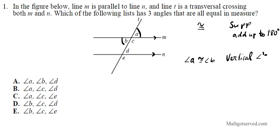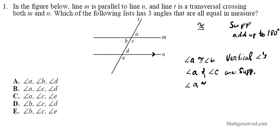Vertical angles are always congruent. Now, angle A and angle C are supplementary — supplementary angles basically means they add up to 180. Angle A is congruent to angle D. These two angles are congruent because they are corresponding angles, known as corresponding angles. So we have congruency, congruency, and supplementary.